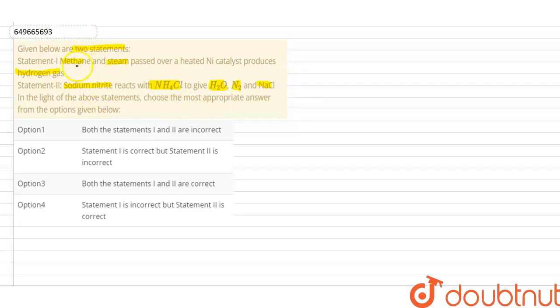So, we will find out. First, methane and steam. Methane, that is CH4 and steam, that is H2O. When we pass through nickel catalyst, the formation is CO plus H2. And this combination is water gas. It is 2H2.